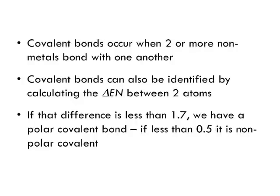Covalent bonding. Covalent bonds occur when two or more nonmetals bond with one another. Covalent bonds can also be identified by calculating the change in the electronegativity between the two atoms. If that difference is less than 1.7, we have a polar covalent bond.